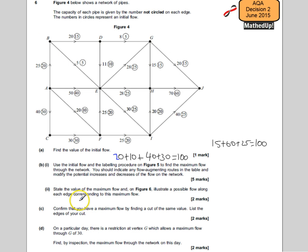The next part says confirm that you have a maximum flow by finding a cut of the same value, and list the edges of the cut. On this diagram I'm going to demonstrate a cut that works. We want to go through here, so that's 20 and 15, which is 35, and 28, which is 63, and 30 is 93, and 25 gives us 118.